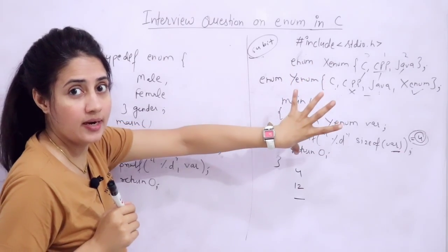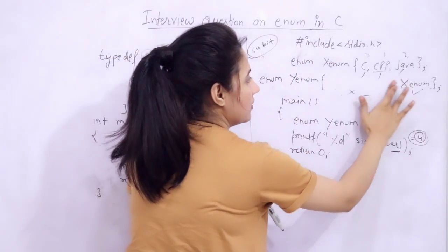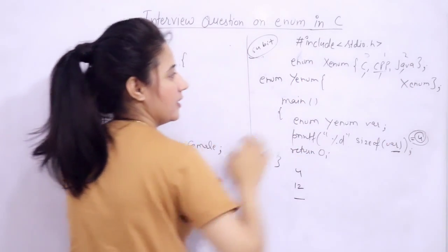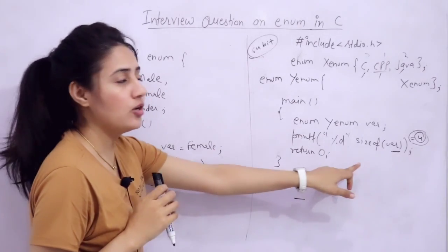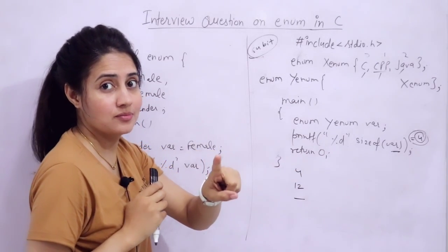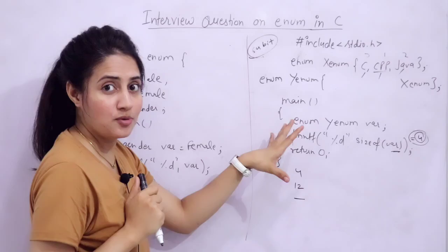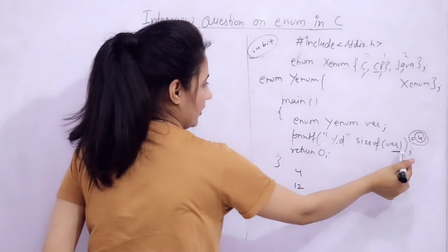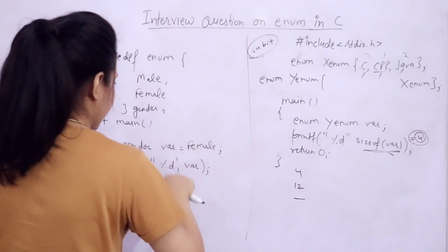You can try out this thing - remove this and just write x_enum here. What output you will get? This is assignment for you. You have to tell me in comment box. Run this program and tell me what you will get for sizeof var.